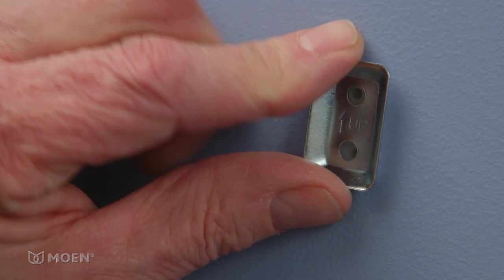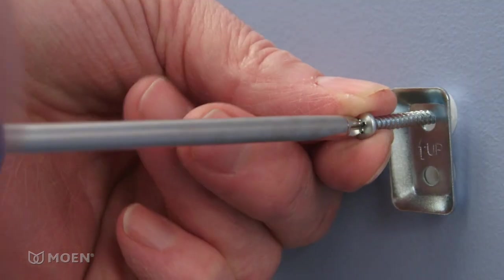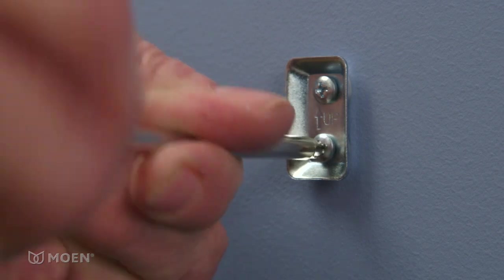Position each mounting bracket over the holes with the up symbol facing up and thread the screws until tight. Be careful not to over tighten.